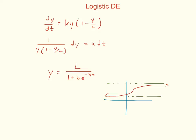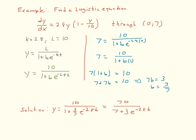Let's look at an example. We want to find the logistic equation where dy/dx equals 2.8y·(1 − y/10), and it passes through the point (0, 7). Here k = 2.8 and L = 10. Substituting into the solution form gives y equals 10 over (1 + b·e^(−2.8t)).